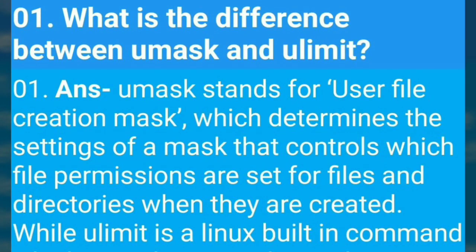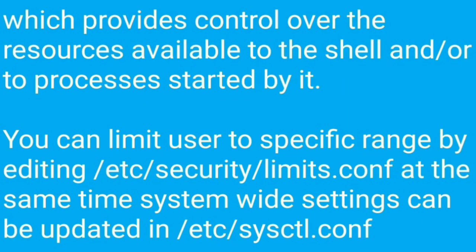What is the difference between umask and ulimit? Umask stands for User File Creation Mask, which determines the settings of a mask that controls which file permissions are set for files and directories when they are created. Ulimit is a Linux built-in command which provides control over the resources available to the shell or to the processes started by it. You can limit a user to a specific range by editing /etc/security/limits.conf, and system-wide settings can be updated in /etc/sysctl.conf.